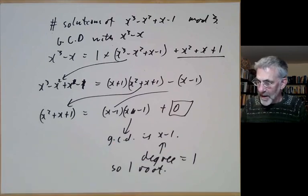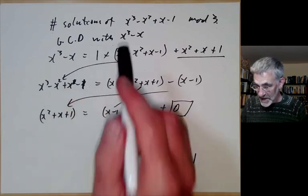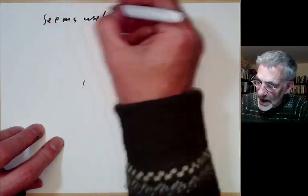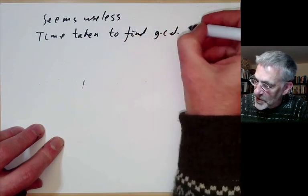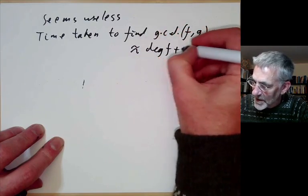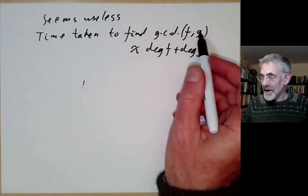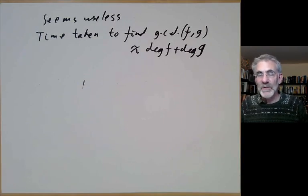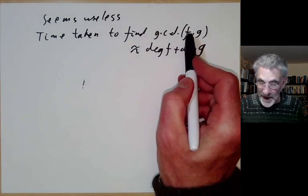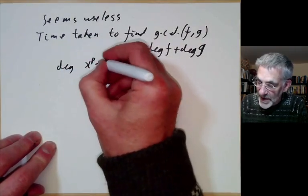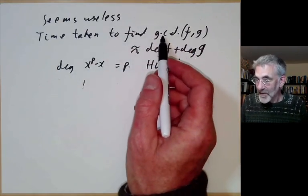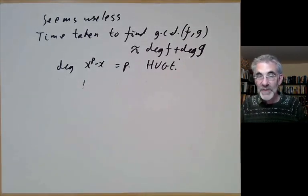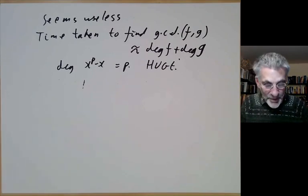At first sight this gives a neat method, but at second sight it seems useless. The time taken to find gcd of two polynomials f and g is proportional to deg(f) + deg(g) steps. The problem is the degree of x^p − x is p, which might be huge. If p has 100 digits, finding the gcd would take about 10^100 steps — no better than finding roots one by one.